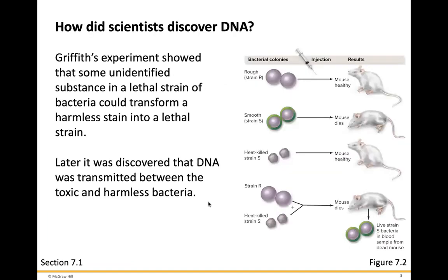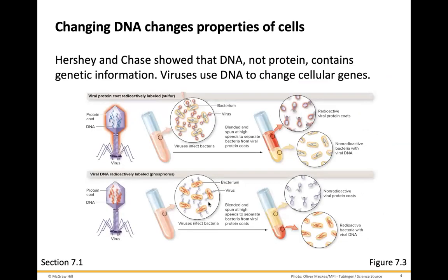So how did scientists discover DNA? It was through Griffith's experiment, which showed that some unidentified substance in a lethal strain of bacteria could transform a harmless strain into a lethal strain. Later, it was discovered that DNA was transmitted between the toxic and harmless bacteria. Hershey and Chase showed that DNA, not proteins, contains the genetic information, demonstrated by viruses using DNA to change cellular genes.